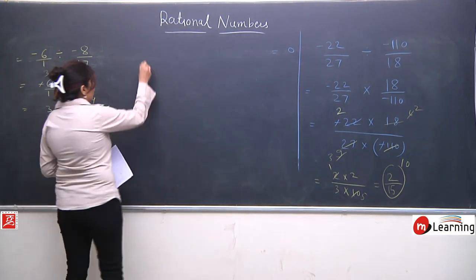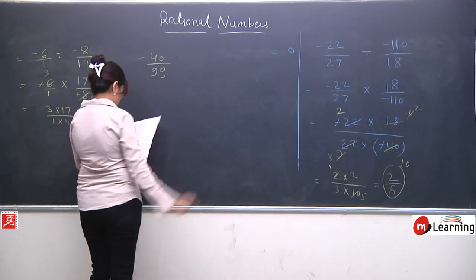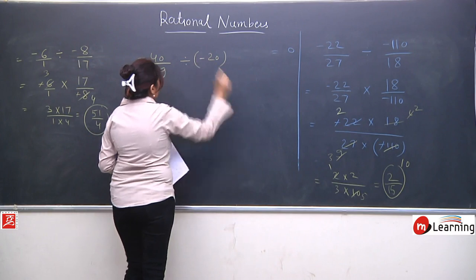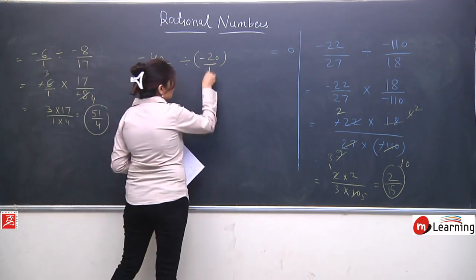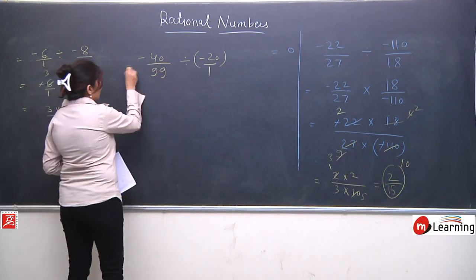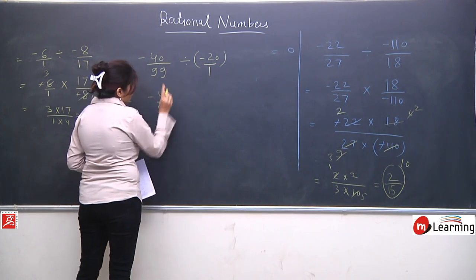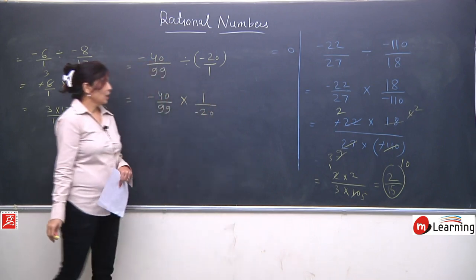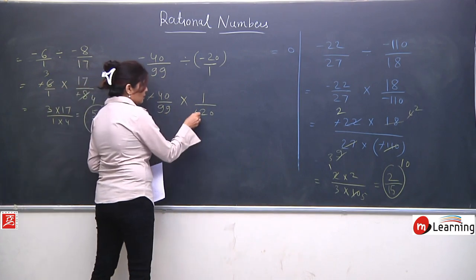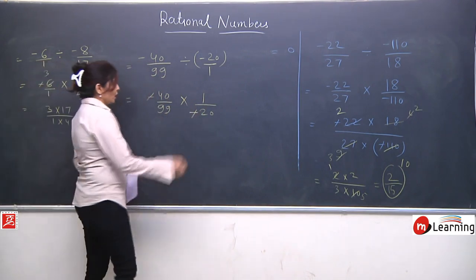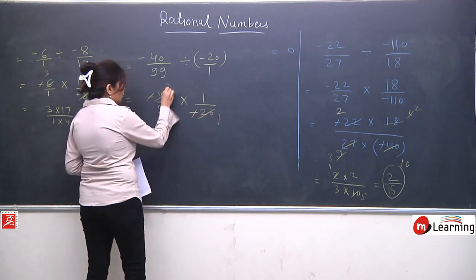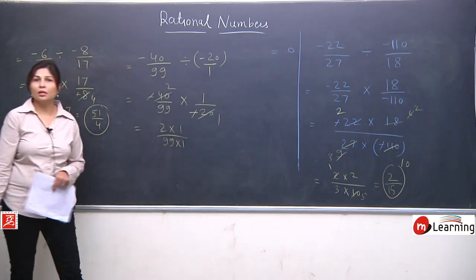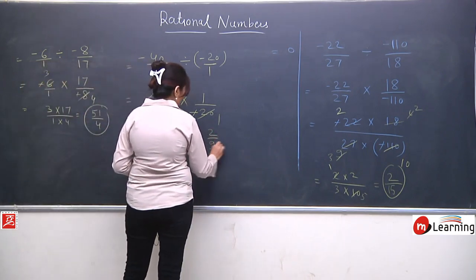Last simple question: -40/99 divided by -20. Put 1 in denominator of -20. -40/99 divided by -20/1: divide converts to multiplication, -20/1 is reciprocated to 1/-20. Negative negative cancel to become positive. 2 ones are 20 and 2 twos are 40. After cancellation, remaining is 2 upon 99. Your answer is 2/99.